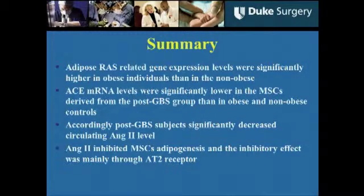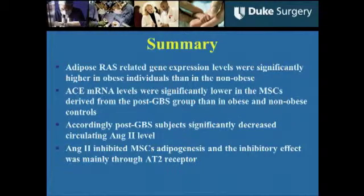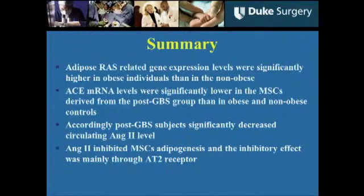In summary, adipose RAS-related gene expression level was significantly increased in obese subjects. Angiotensin converting enzyme mRNA level was significantly lower in the post-gastric bypass group, and accordingly post-gastric bypass subjects showed significantly decreased circulating angiotensin II levels. Finally, angiotensin II inhibits mesenchymal stem cell adipogenesis, and this inhibitory effect was mainly through receptor 2.